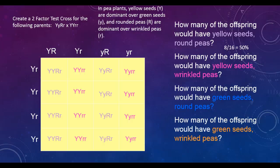Next up is yellow seeds and wrinkled peas. This is at least one capital Y and both of the Rs need to be lowercase. We have eight outcomes that also fit this scenario. Eight out of 16 for 50%.